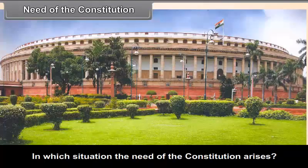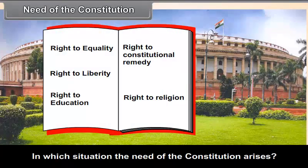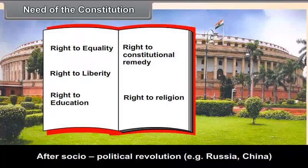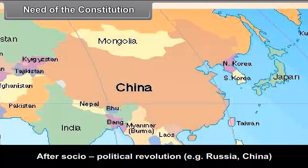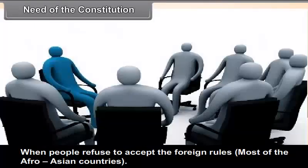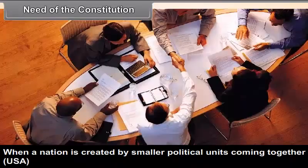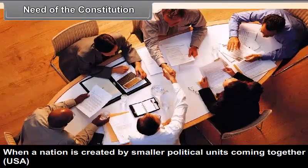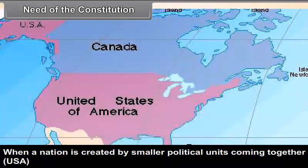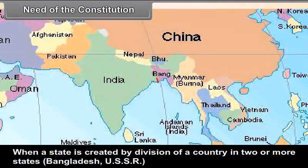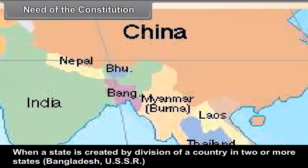In which situations does the need for a Constitution arise? When people refuse to accept foreign rule — as in most Afro-Asian countries. When a nation is created by smaller political units coming together, such as the USA. When a state is created by the division of a country into two or more states, such as Bangladesh and the USSR.